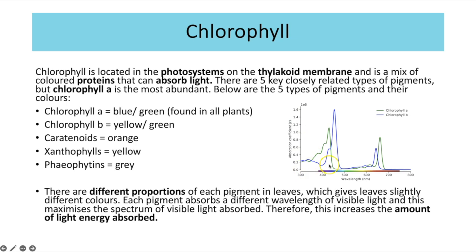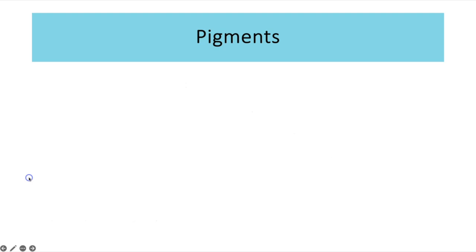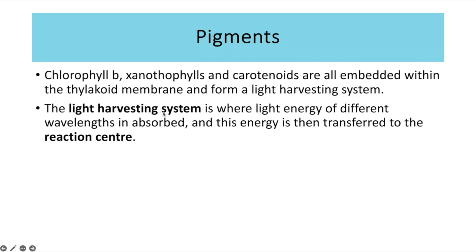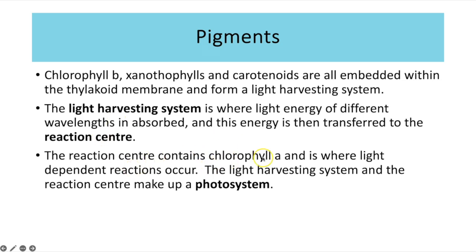We can see this on the absorption graph plotted against wavelength. This graph only shows chlorophyll A and B, but even those two pigments — both shades of green — absorb different wavelengths at different proportions. Adding the other pigments would give an even broader spectrum of wavelengths with higher absorption, meaning more light energy can be absorbed for photosynthesis. Chlorophyll B, xanthophylls and carotenoids are all embedded within the thylakoid membrane and form a light harvesting system, where light energy of different wavelengths is absorbed and transferred to the reaction centre. The reaction centre contains chlorophyll A and is where light-dependent reactions occur. Together, the light harvesting system and the reaction centre make up a photosystem.